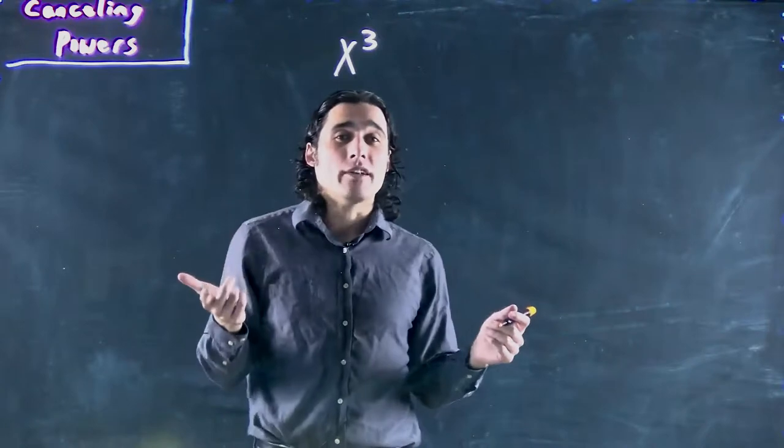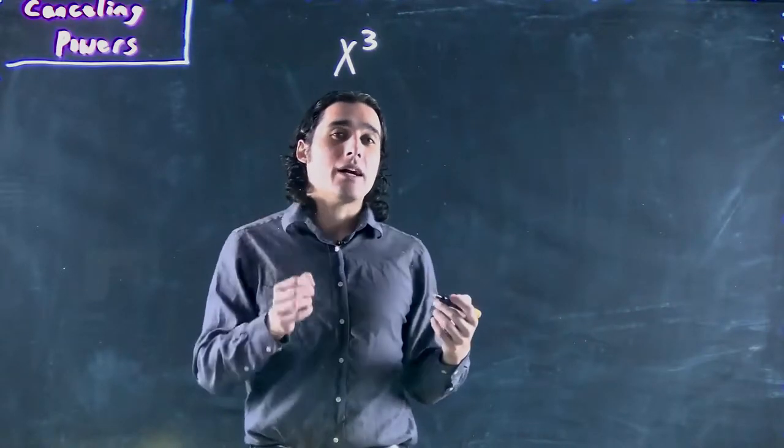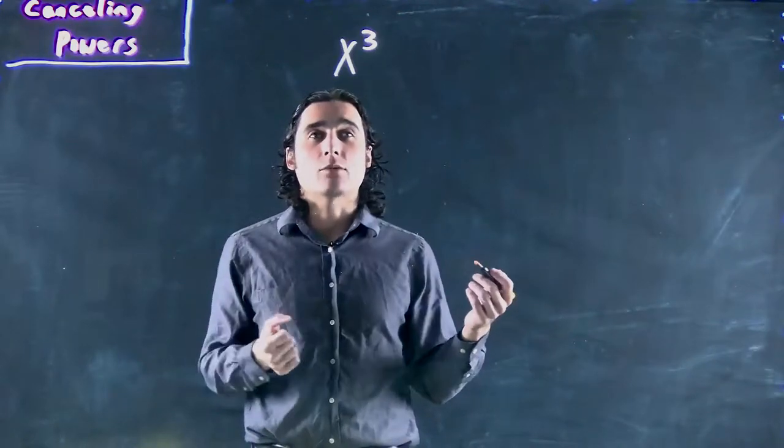Basically, we want this to become 1. If we have x to the 1, that's the same as x. So if we multiply by the inverse, it will become 1, and that's what we want.